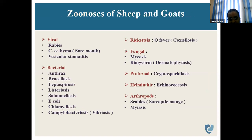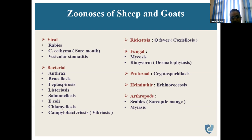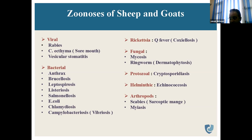The most common zoonoses of sheep and goat include — in terms of viral: rabies, contagious ecthyma (also called sore mouth), and vesicular stomatitis. Bacterial: anthrax, brucellosis, leptospirosis, listeriosis, salmonellosis, E. coli, chlamydiosis, and campylobacteriosis. Rickettsial: Q fever (also called coxiellosis). Fungal: ringworm/dermatomycosis and mycosis. Protozoal: cryptosporidiosis. Helminthous: echinococcosis. And in terms of arthropods: scabies, sarcoptic mange, and myiasis.